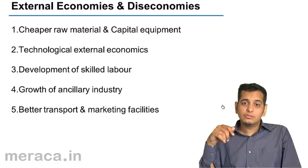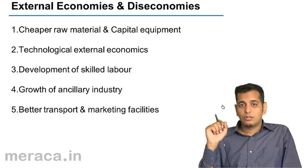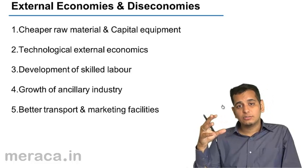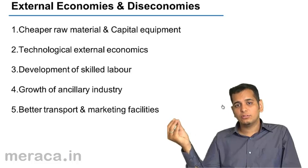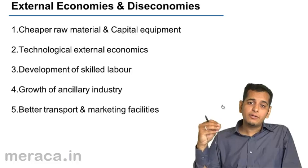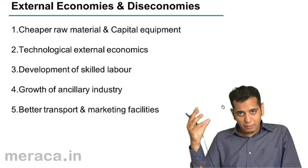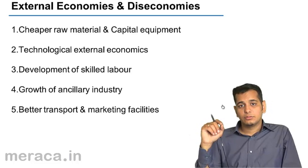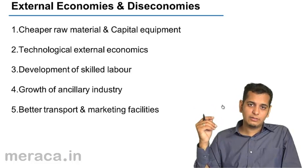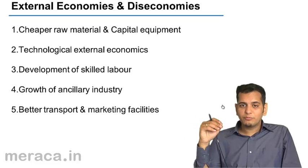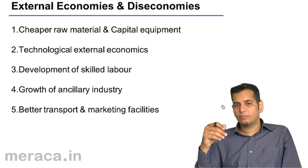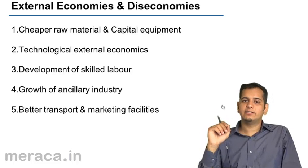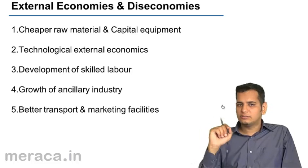Growth of ancillary industry is also potentially dangerous for the firm. Many times when ancillary industries grow, the firms in those industries tend to become bigger. When they become big, they tend to charge a higher rate from you and dictate terms to you. So you start getting diseconomies of scale. There is also a possibility that firms from the ancillary industry may do a forward or backward integration and get into direct competition with you, hurting your sales directly, in which case you again incur diseconomies of scale.